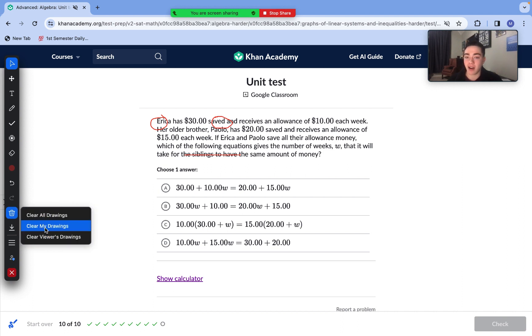Moving to question number ten here, our last one. Erica has $30 saved and receives an allowance of $10 each week. Her older brother Paolo has $20 saved and receives an allowance of $15 each week. If Erica and Paolo save all their allowance money, which of the following equations give the number of weeks it will take for the siblings to have the same amount of money? The basic gist here, we need to set up an equation, have Erica's linear equation on the left side, have Paolo's linear equation on the right side, and then see which of our answer choices matches our setup. It's very important to determine which numbers are y-intercept or initial one-time amounts, and which values are going to be recurring or our slope values.